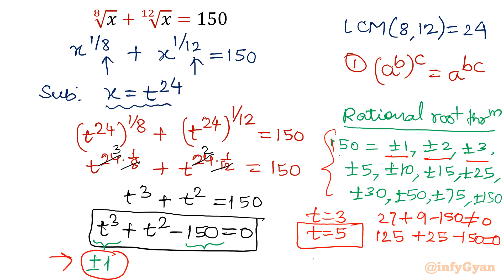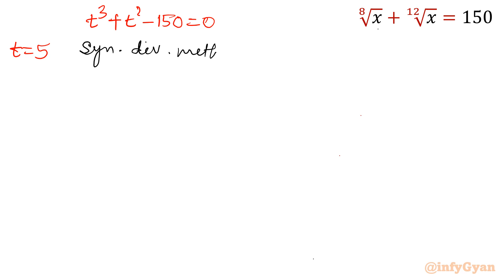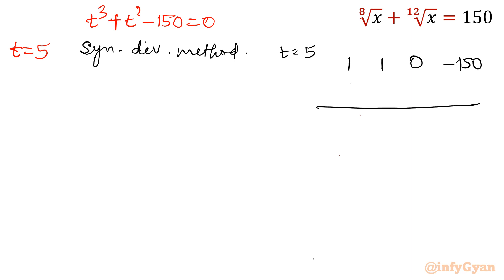Using synthetic division, I will find the remaining two factors of t cubed plus t squared minus 150 equal to 0, given t equal to 5 is one solution. Writing t equal to 5 with coefficients of the cubic polynomial: 1, 1, 0 (since the t term is absent), and constant minus 150. Bringing down 1, multiplying 5 times 1 gives 5, adding gives 6; 6 times 5 gives 30, adding gives 30; 30 times 5 gives 150, giving remainder 0.